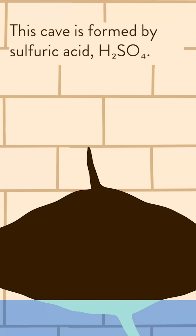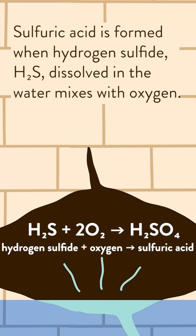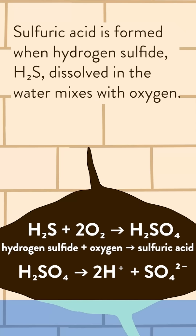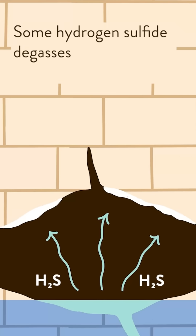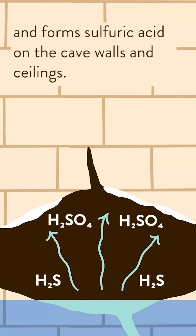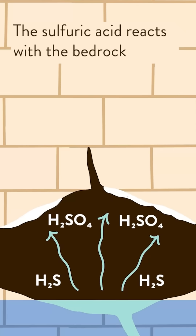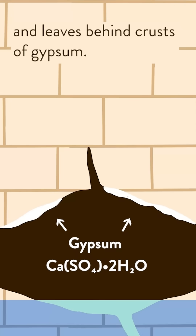This cave is formed by sulfuric acid. Sulfuric acid is formed when hydrogen sulfide dissolved in the water mixes with oxygen. Some hydrogen sulfide degasses and forms sulfuric acid on the cave walls and ceilings. The sulfuric acid reacts with the bedrock and leaves behind crusts of gypsum.